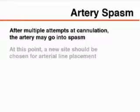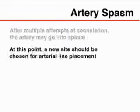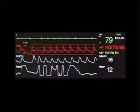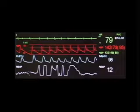Finally, after multiple attempts at cannulation, the artery may go into spasm, which will make it nearly impossible to cannulate. In this setting, attempts at the artery should cease and a new site should be selected. By following these steps, arterial catheterization can be a safe and effective procedure.